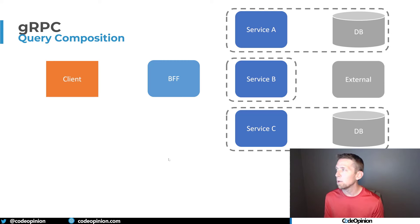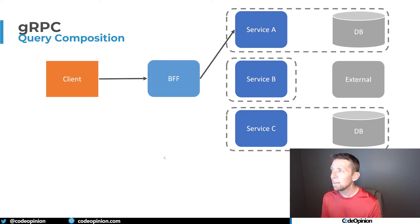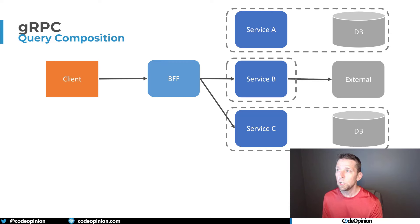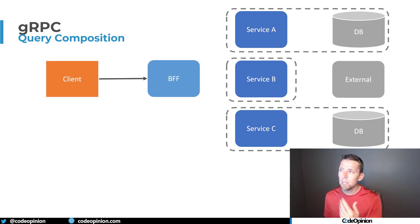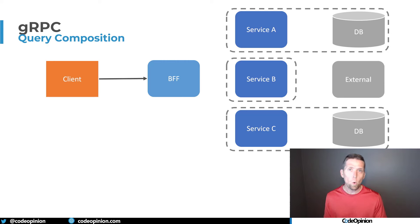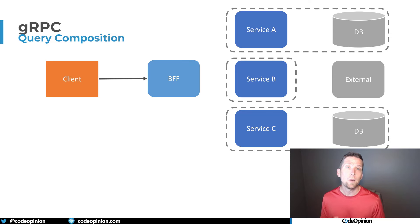So if we have a client — let's say it's a browser — making a request to some backend-for-frontend or API gateway, at that point it could be using gRPC to reach out to all the different services to get the data it needs to build out the view model or UI to return to the client. Typically you'd see an HTTP API used here because it's the same request-response fashion. To me, this is a really good use case where gRPC could work well.